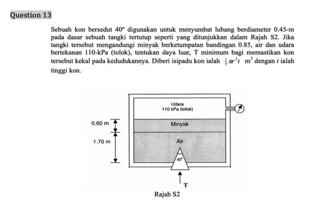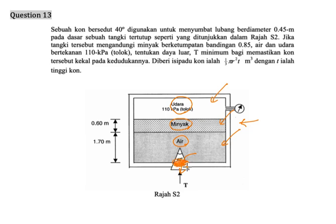This is question number 13. We have a closed tank with a hole at the bottom plane. We fill it with water, then oil, then gas — meaning air. After filling with all these fluids, they will flow out through the hole. To keep the fluid in the tank, we stop the hole with a cone.